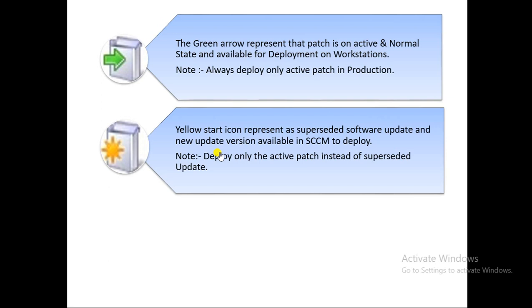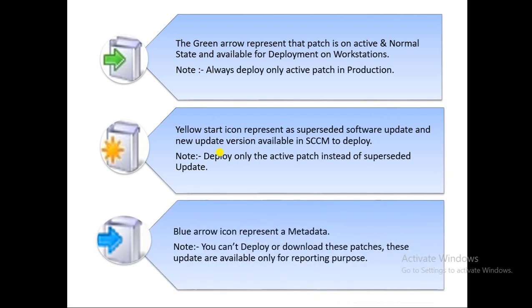The blue arrow icon represents metadata-only patches. If you see patches with this blue arrow icon, you cannot deploy or download them. These patches are available only for reporting purposes. So if you see this in SCCM or WSUS, you cannot download or deploy these patches — they are for reporting only.